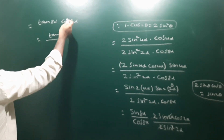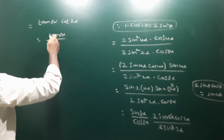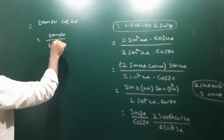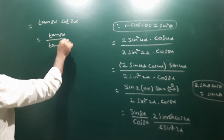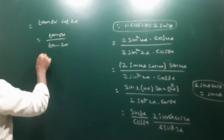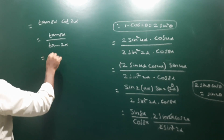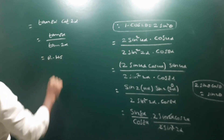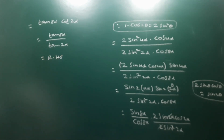The denominator part becomes tan2α, which is our RHS. That is the answer — the identity is proved.